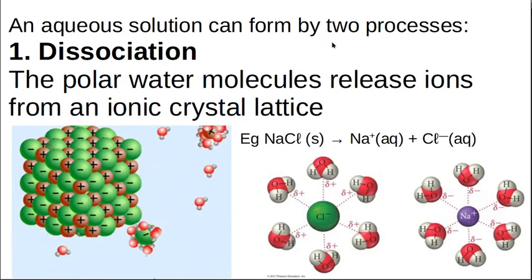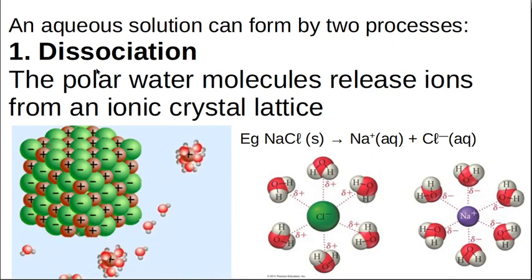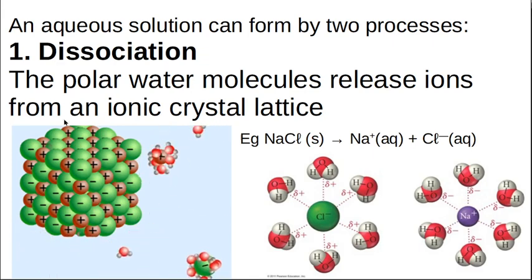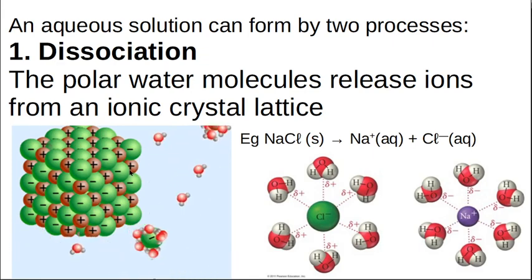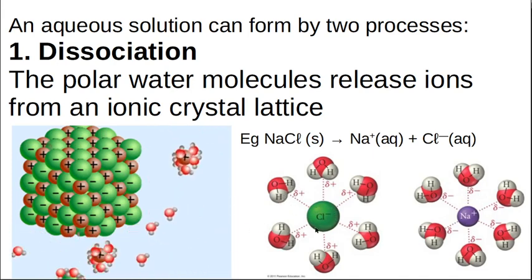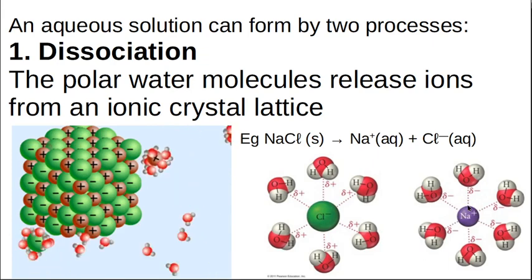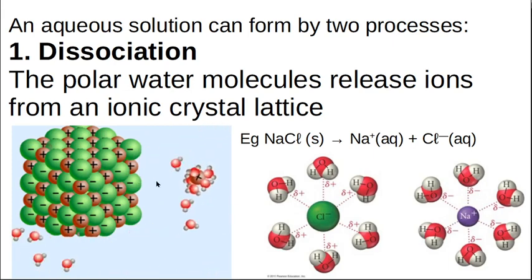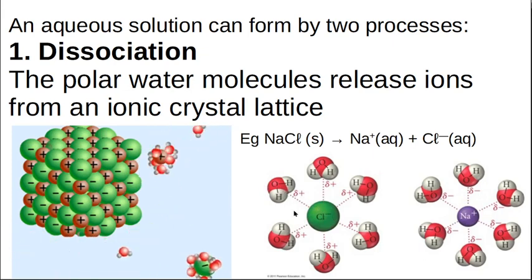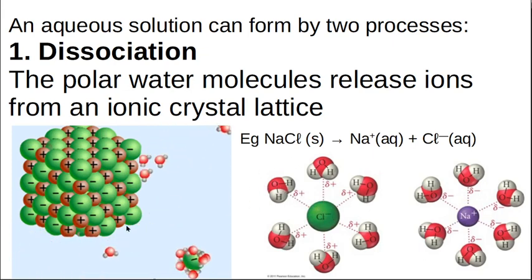So how do aqueous solutions actually form? The first way is it's through what we call dissociation. So here I've got a large sodium chloride crystal and all of the little polar water molecules are coming up to the salt crystal, say at the bottom of my glass of water, and they are arranging themselves so that their positive end is towards the negative chlorine ions and their negative end is towards the positive sodium ions. And so these polar water molecules take the crystal lattice structure apart because of the forces of attraction. Remember, like charges repel, opposite charges attract. So they actually split up the salt crystal.